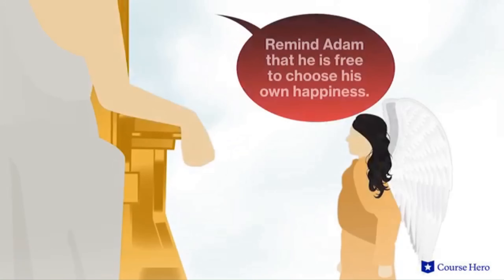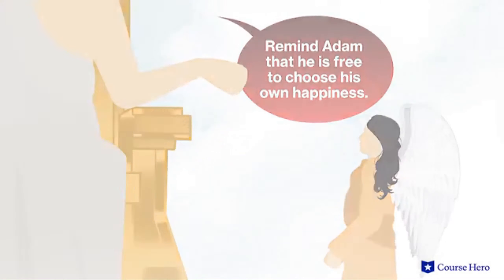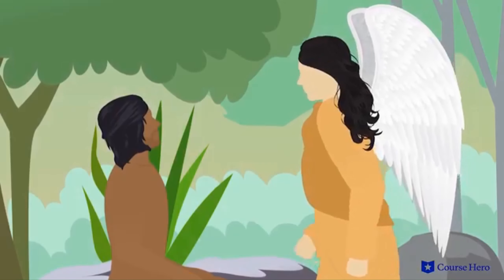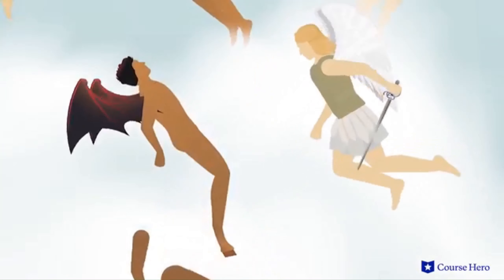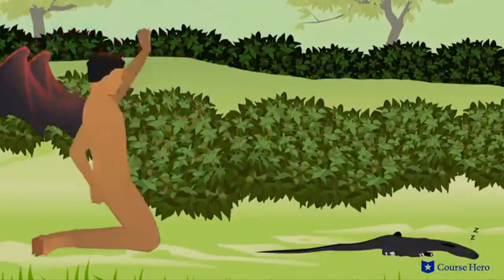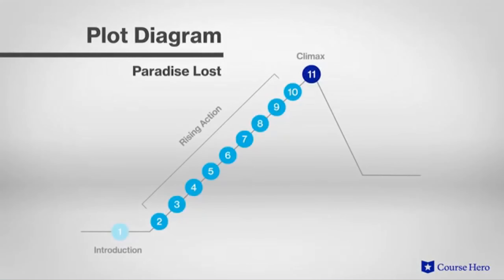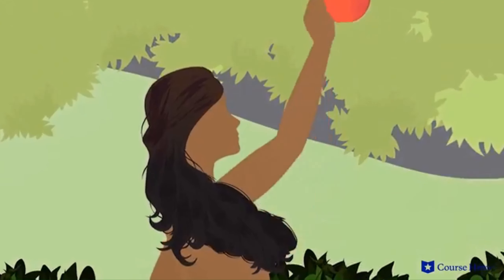God decides he must warn Adam and Eve about Satan, so he sends his archangel Raphael to remind Adam of his free will and warn him about Satan's plotting. Raphael also tells Adam the story of Satan's rebellion in heaven, the ultimate defeat of his army, and his expulsion into hell. After Raphael finishes, Satan returns to the Garden of Eden taking on the form of a serpent. In the climax of the poem, Satan finds Eve alone and tempts her with knowledge and status if she eats the fruit of the tree of knowledge.